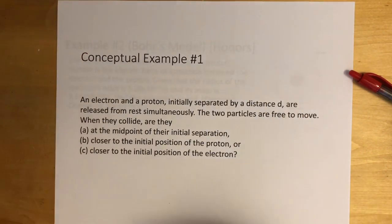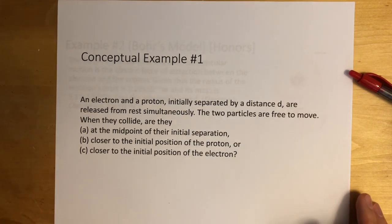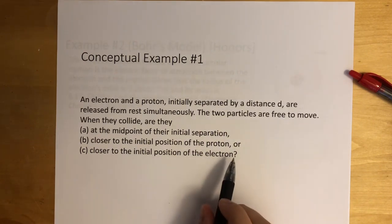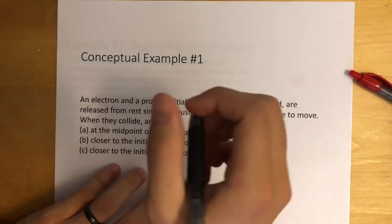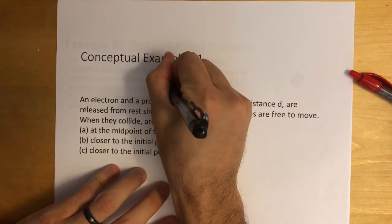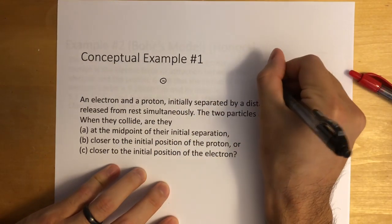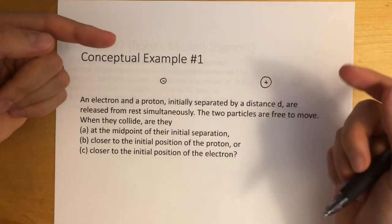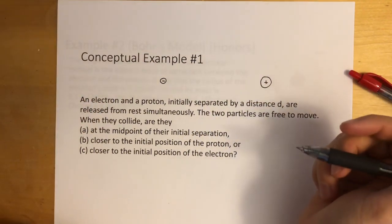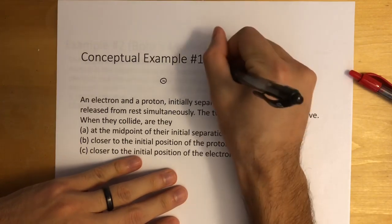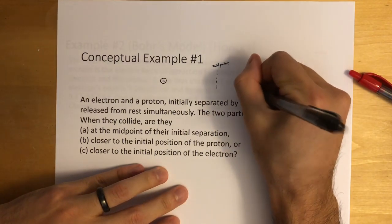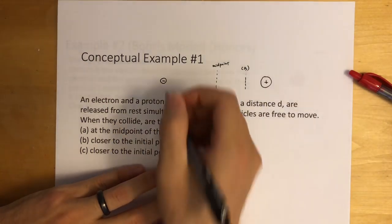Let's look at the next example. An electron and proton, initially separated by distance d, are released from rest simultaneously. The two particles are free to move. When they collide, are they at the midpoint of their initial separation, close to the initial position of the proton, or closer to the initial position of the electron? The electron is on one side and the proton on the other — they're attracted to each other, so they'll move toward each other. But where do they meet?